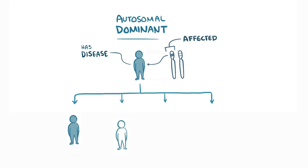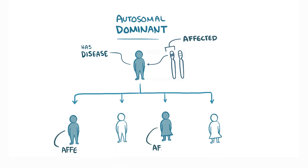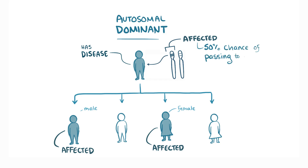Affected people are typically present in each generation because an affected person, male or female, has a 50% chance of passing on the affected gene to a child, which causes that child to have the disease.